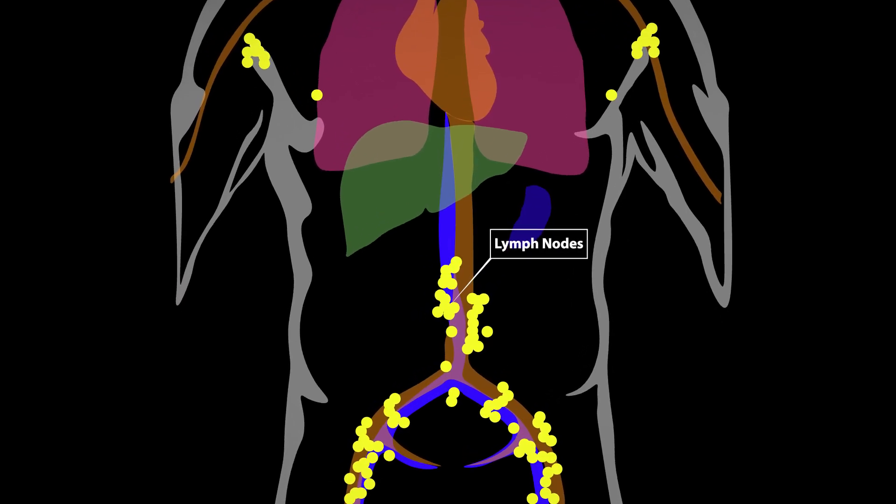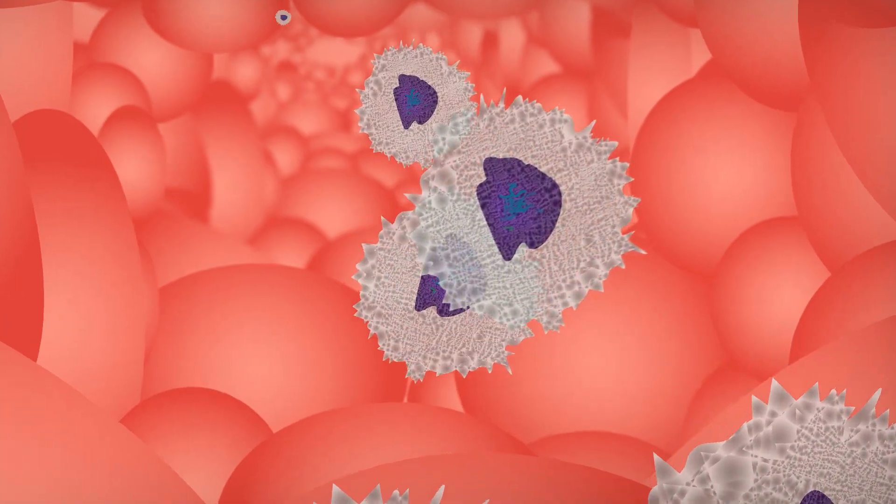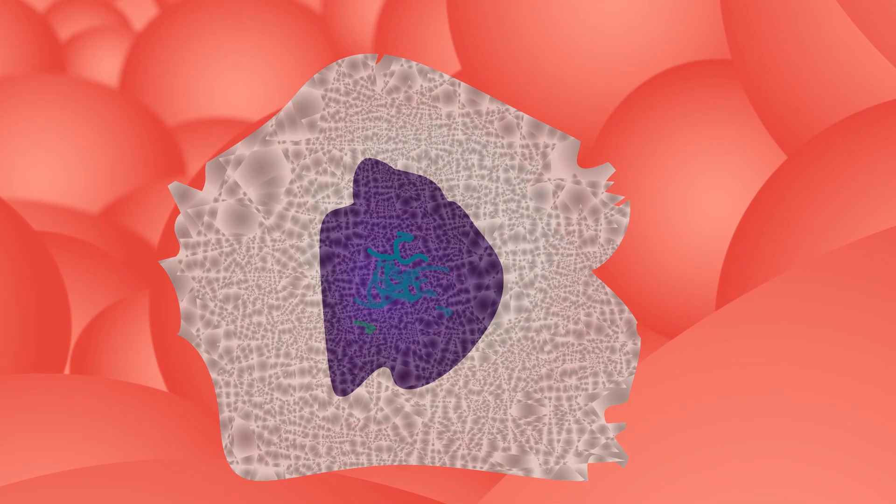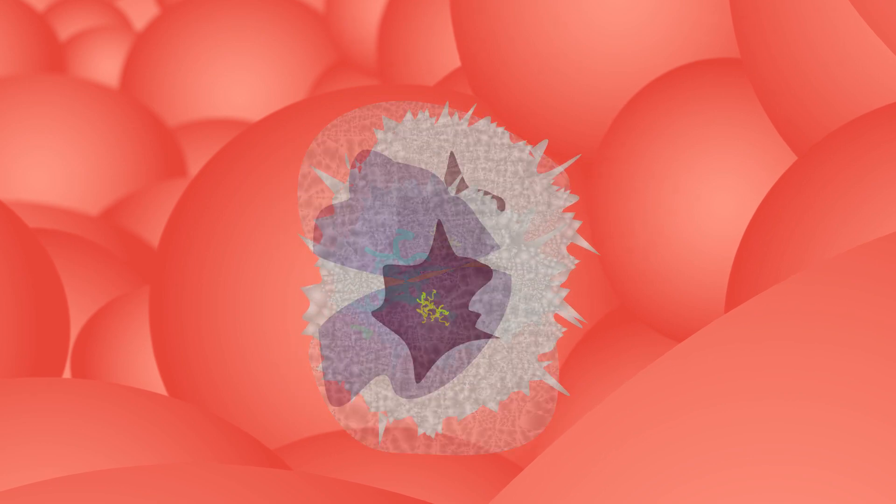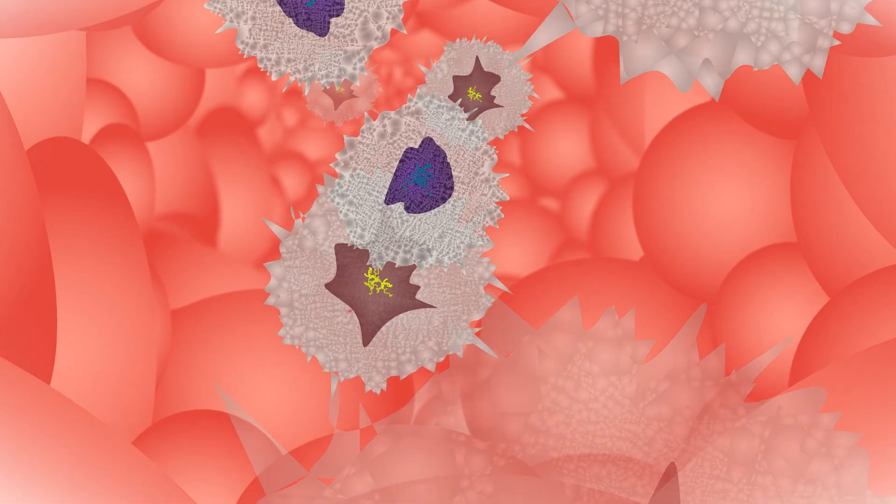Meanwhile, in the body, a similar war is being waged. Just like the factory, a glitch in the cell's gene regulation can lead to malignant proliferation, which is cancer.